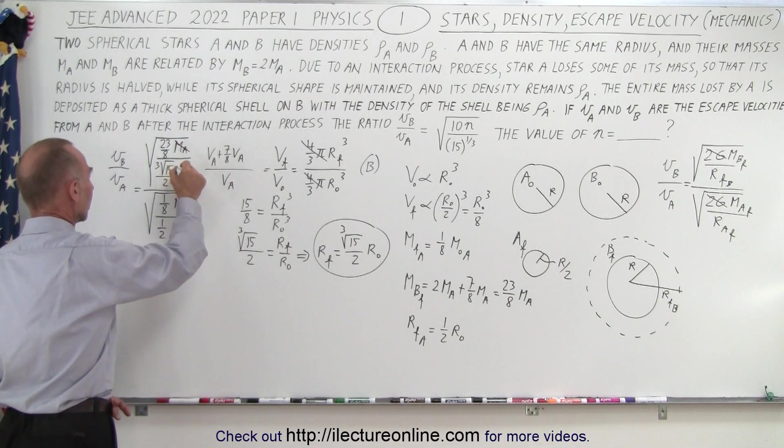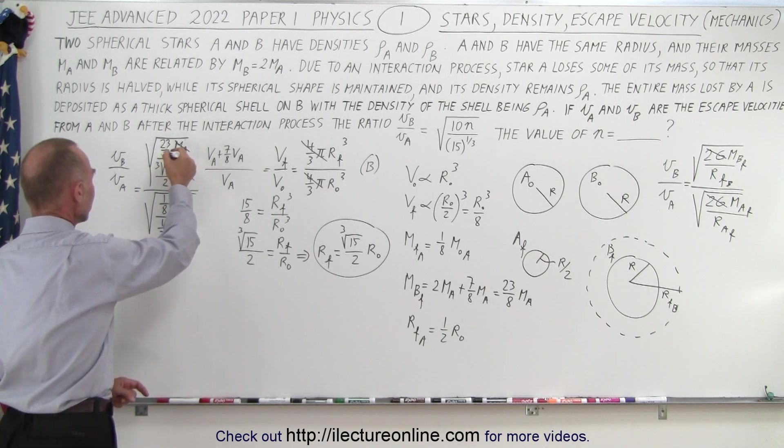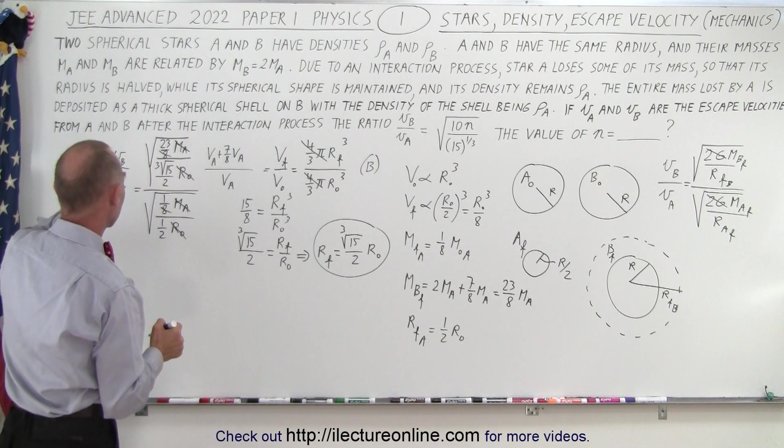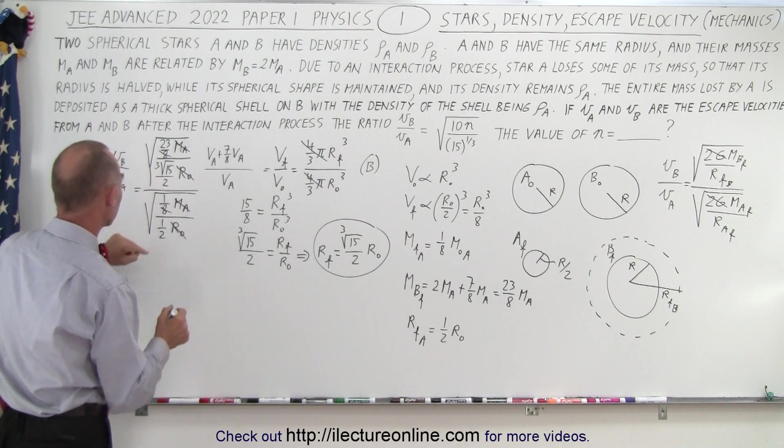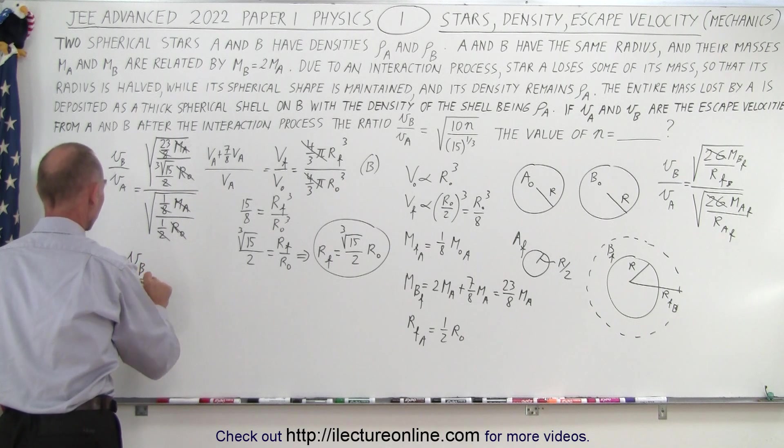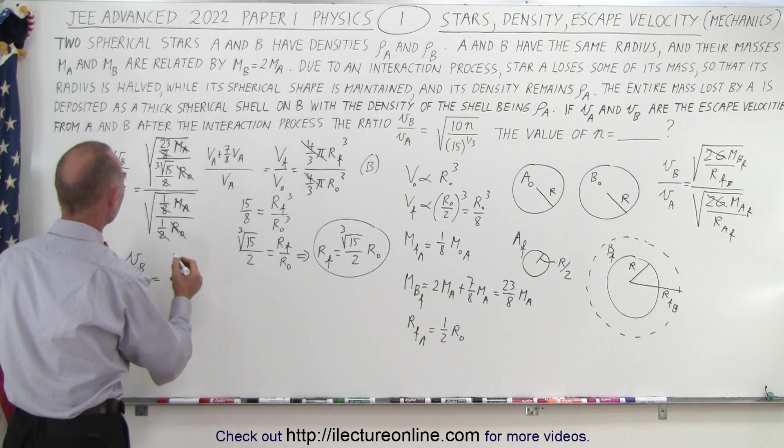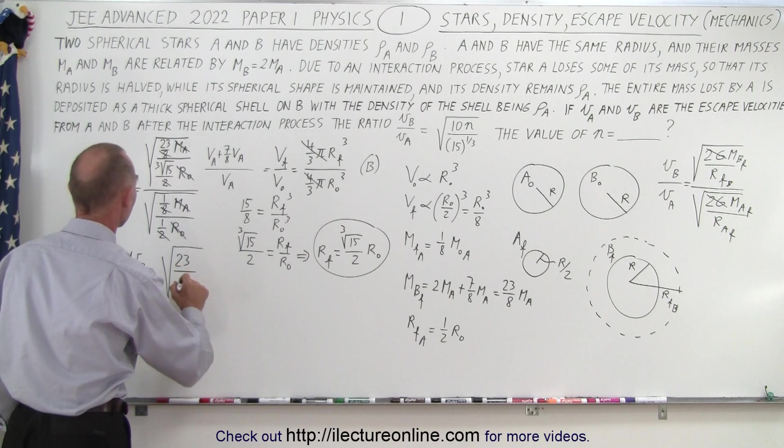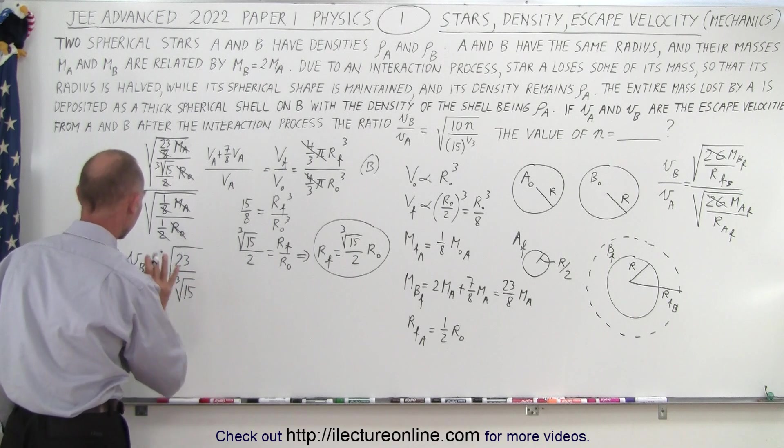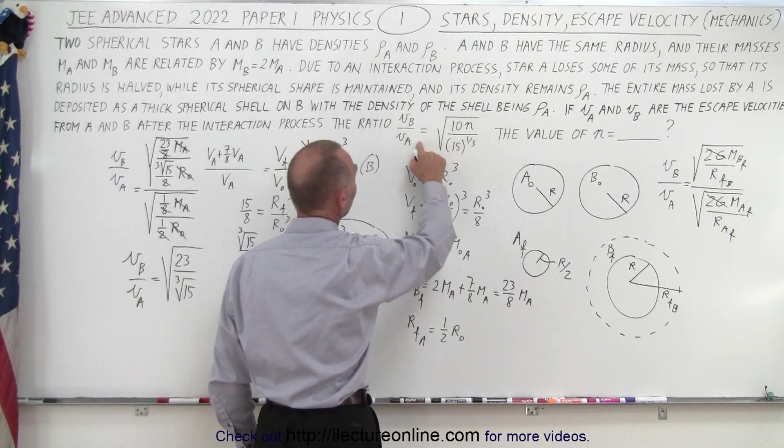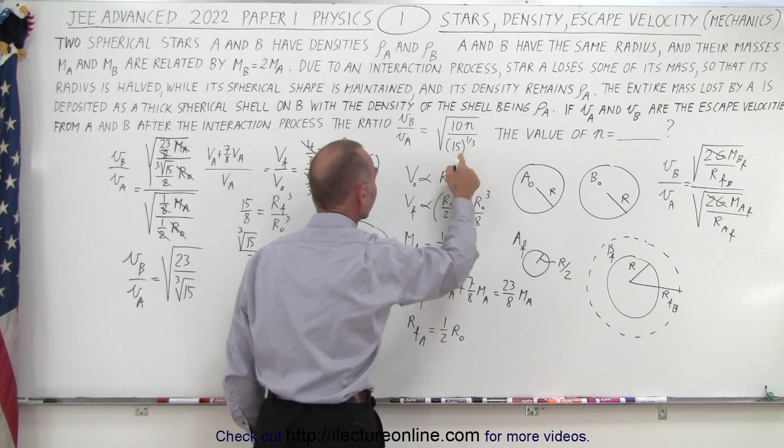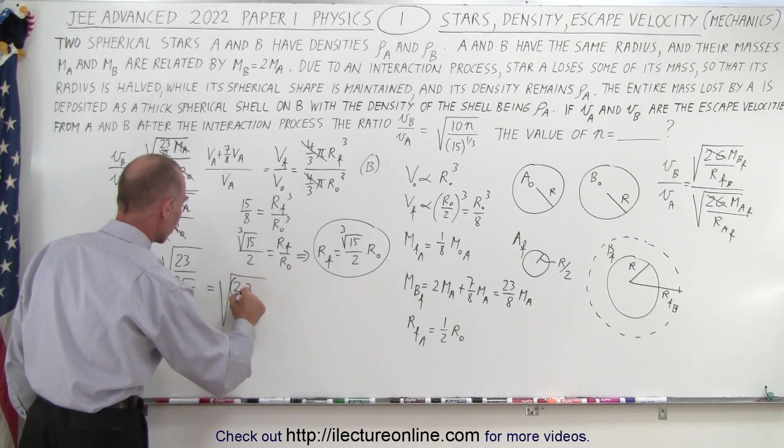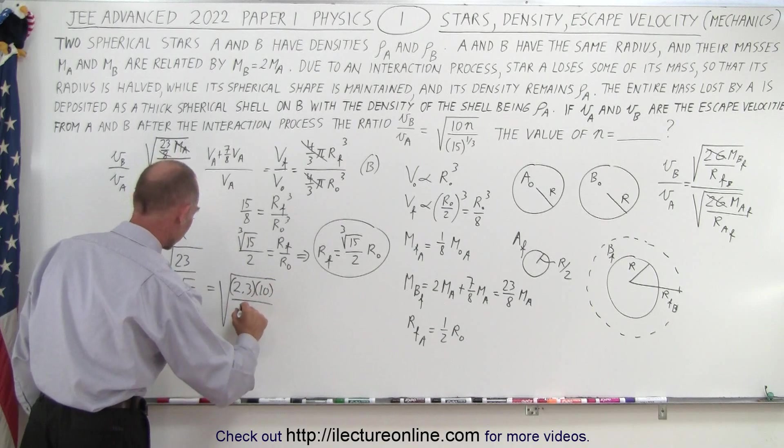Notice that mass A cancels out, radius initial cancels out, the 23 over 8, the 8 cancels out with this 8, and then we have the, let's see here, we have the 2, in the denominator we have a 2 in the denominator, we have a 2 in the denominator, so that cancels out. So we're left with VB over VA is equal to, in the numerator we have, well we have the square root, in the numerator we have 23 divided by the cube root of 15. Okay, now we go and look at what we have over here, we have, this is supposed to be 10 times N divided by the cube root of 15, and we have 23, so we can say that this is equal to the square root of 2.3 times 10 divided by the cube root of 15.